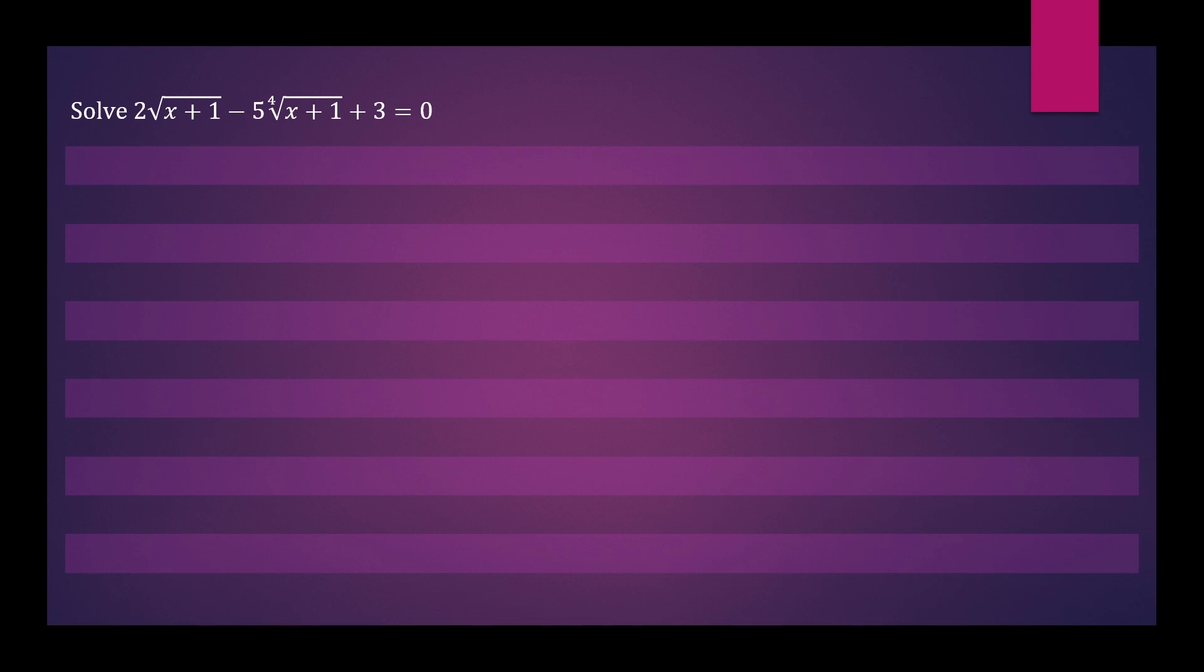Welcome back everyone. Here we want to solve the equation 2 times the square root of x plus 1 minus 5 times the fourth root of x plus 1 plus 3 equals 0.